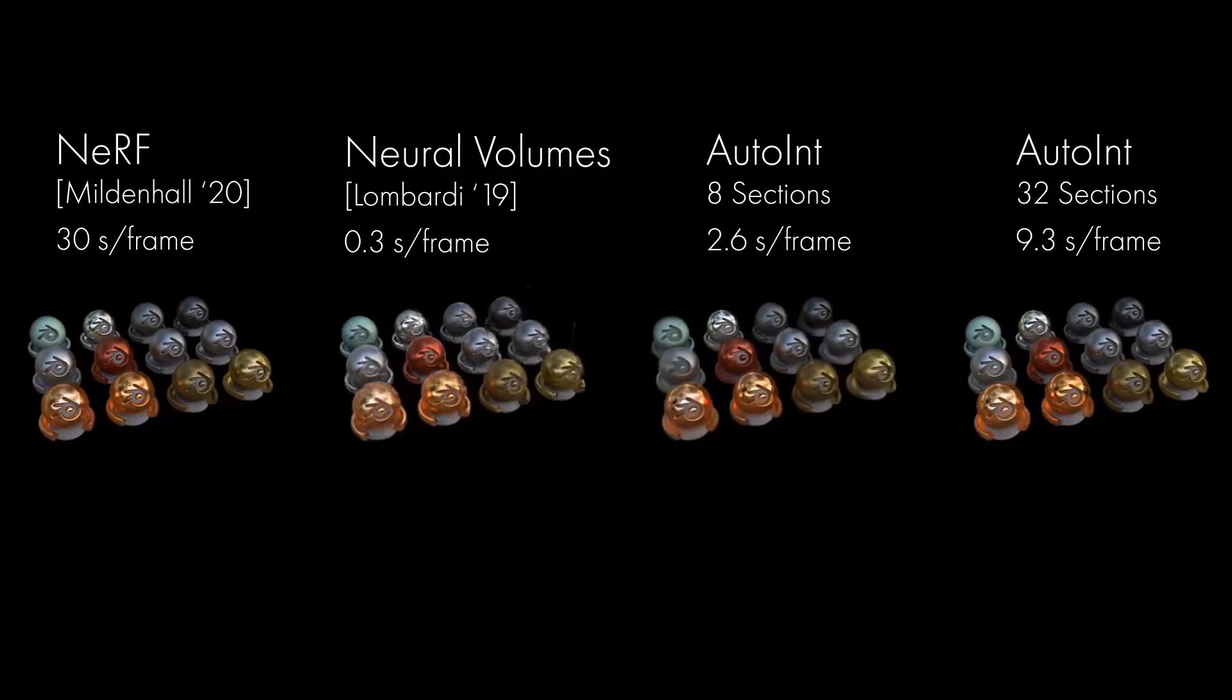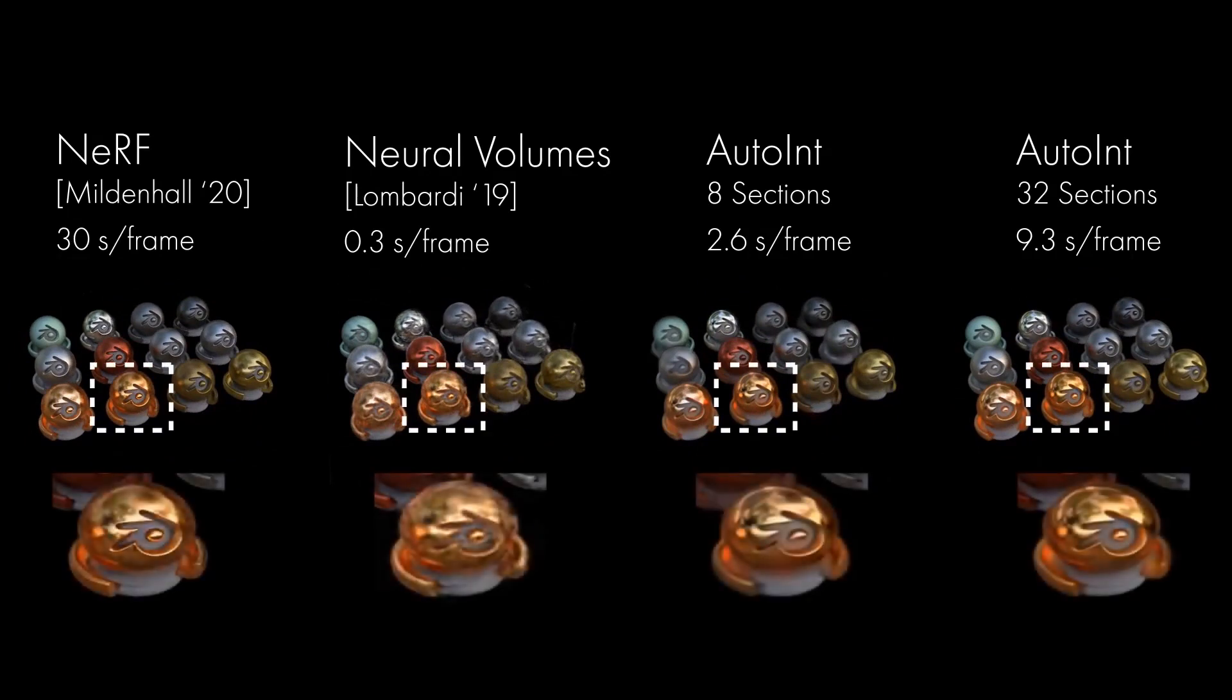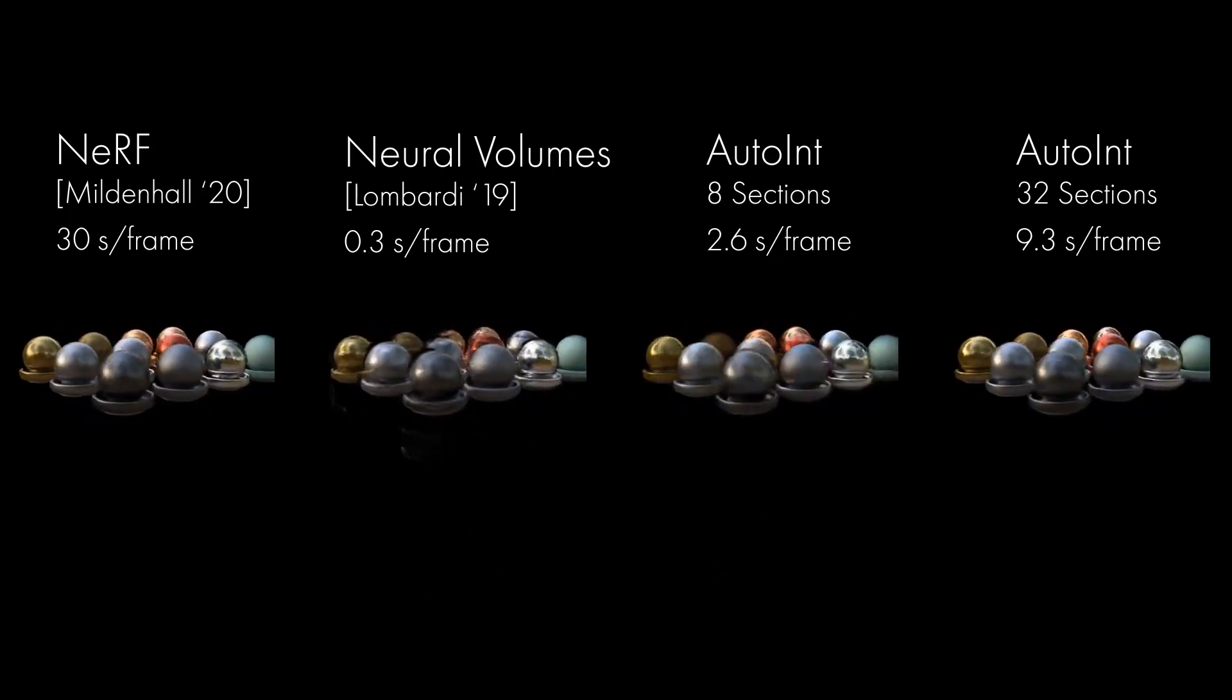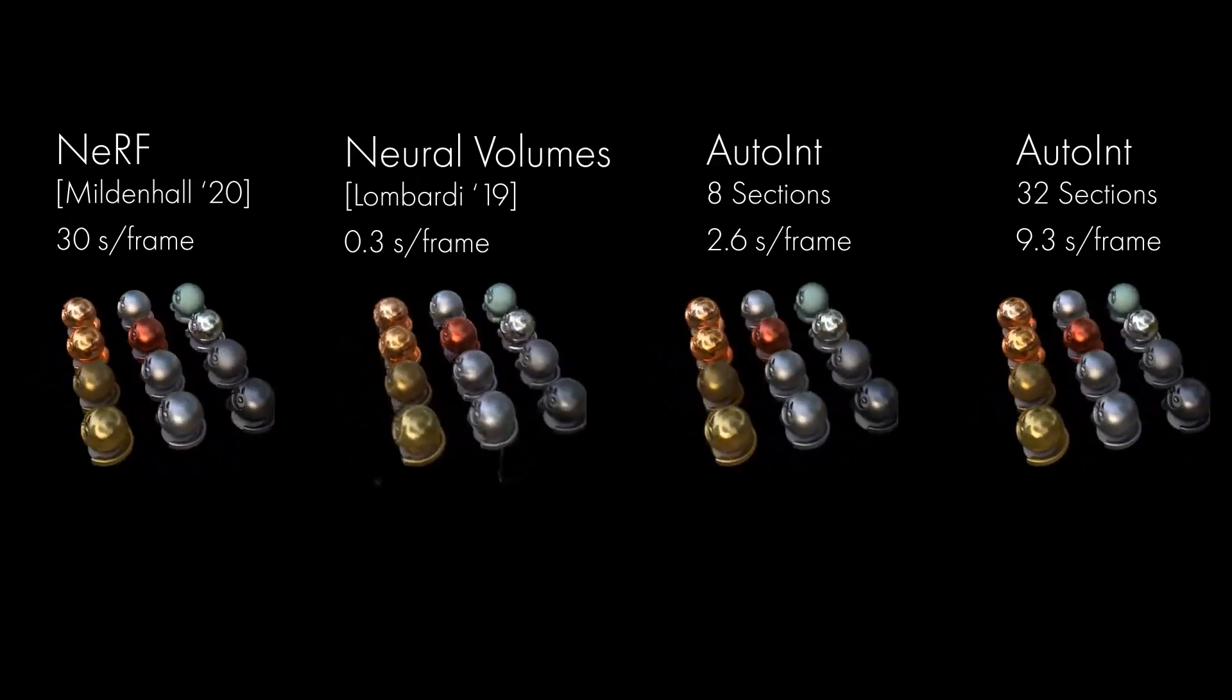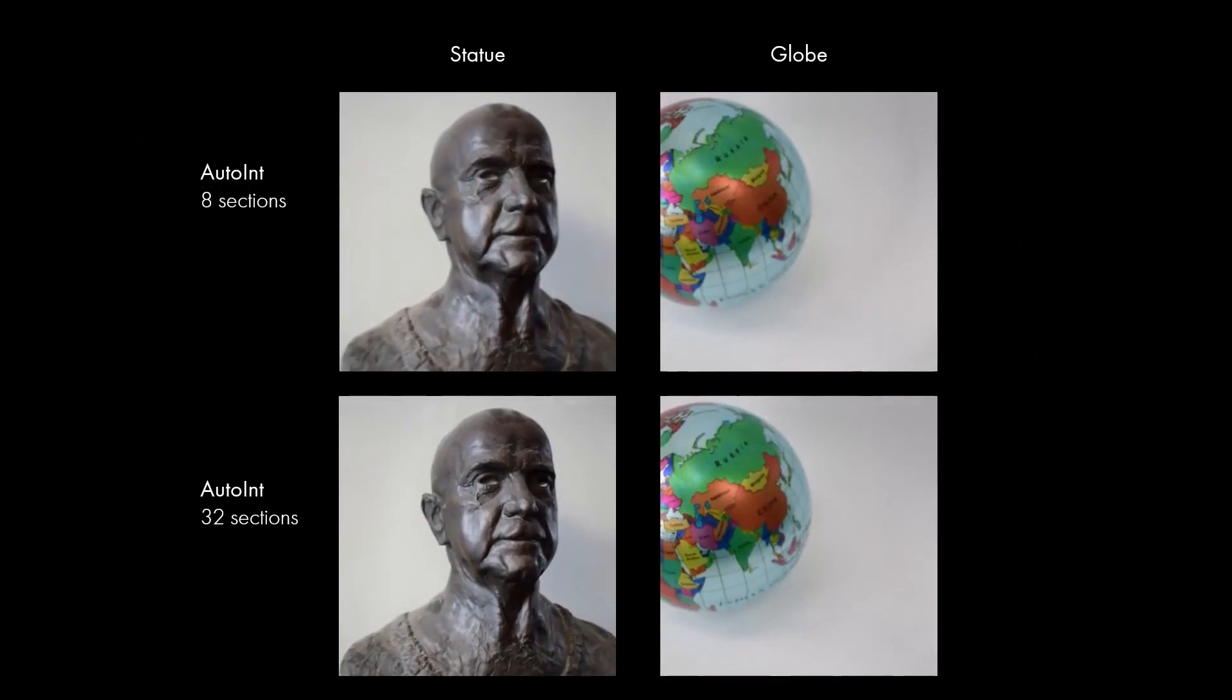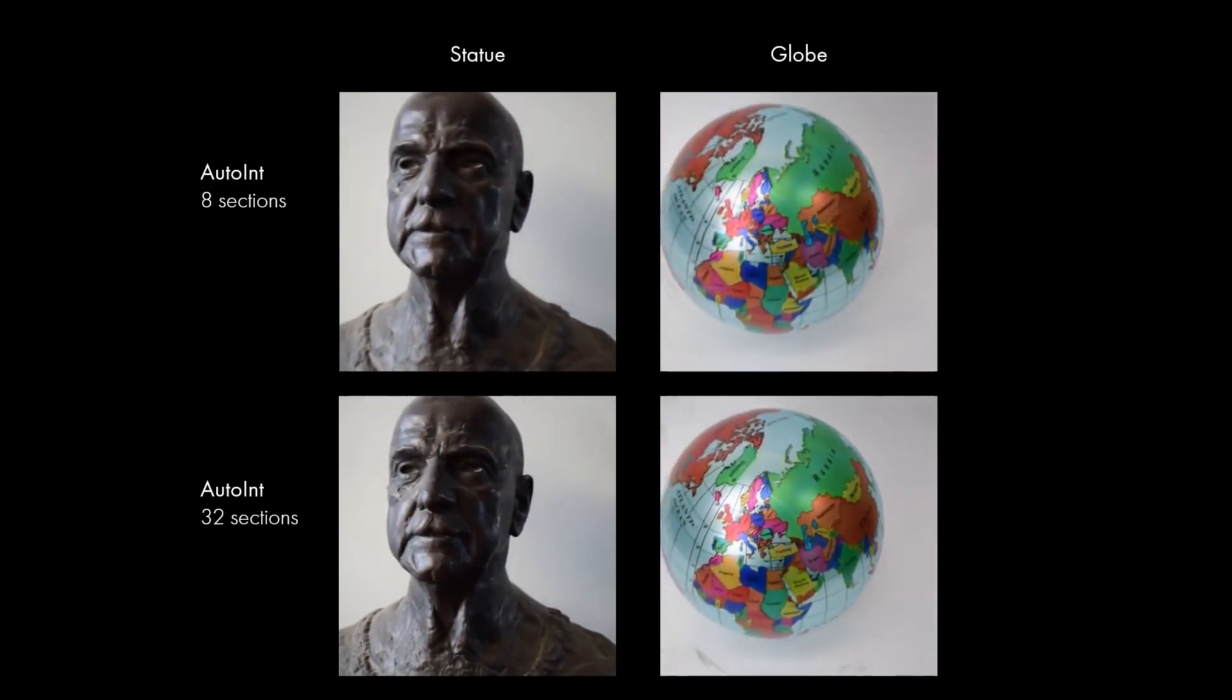Our approach also accurately renders surfaces with challenging reflectance properties better than neural volumes, a method using a convolutional encoder and a voxel grid. We also demonstrate AutoInt on captured datasets.